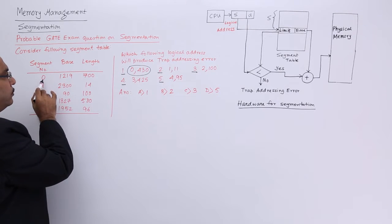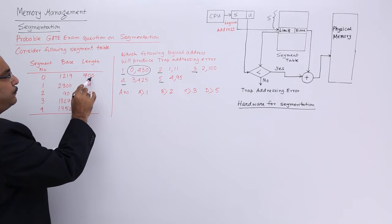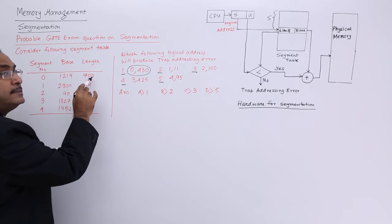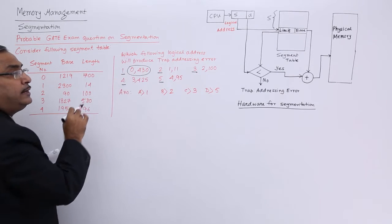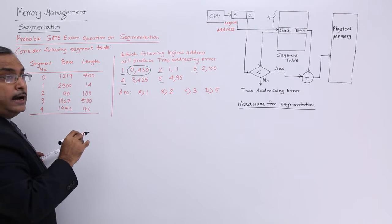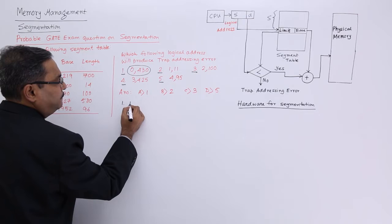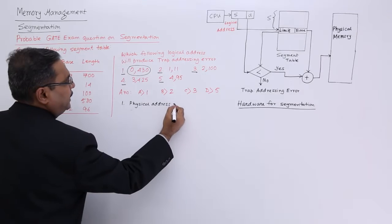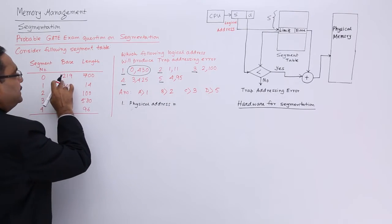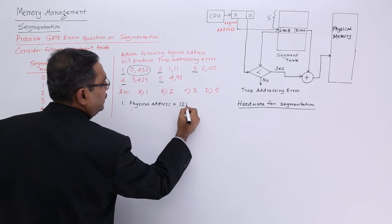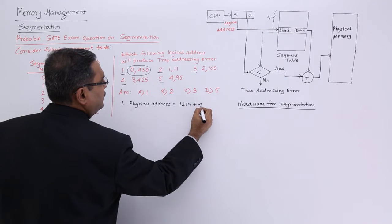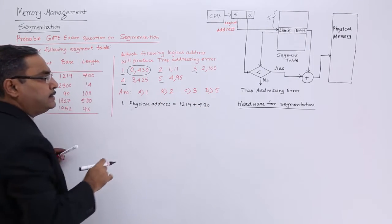So what is the segment number here? 0. What is the offset? 430. You see 430 is less than 700, so this is a valid logical address. If you want to calculate the physical address, it will be base address 1219 plus 430. It is not required in this particular answer, I am just showing you.